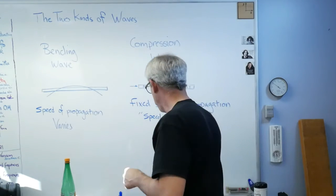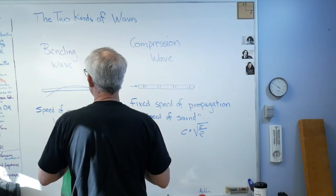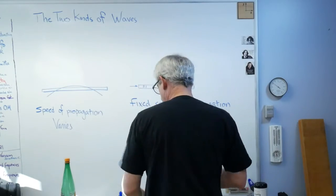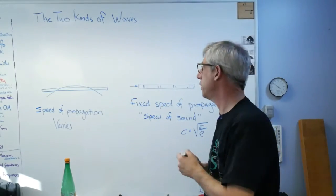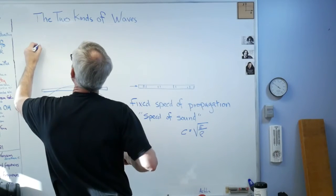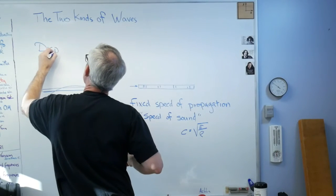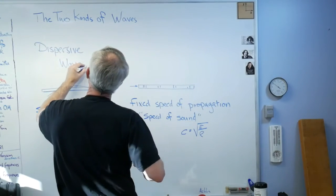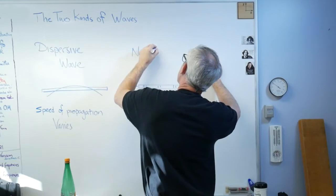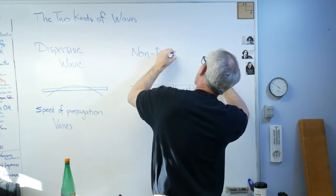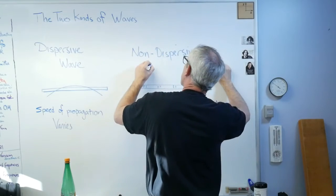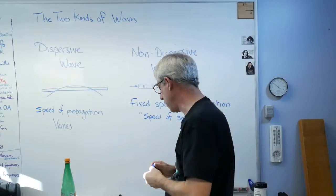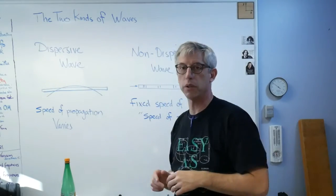That's a bending wave, and the speed of the wave propagation through the material depends on the wavelength of the wave. So the place where you may have heard of this, they don't call them bending waves and compression waves in the literature. This is called a dispersive wave, and this is called a non-dispersive wave.